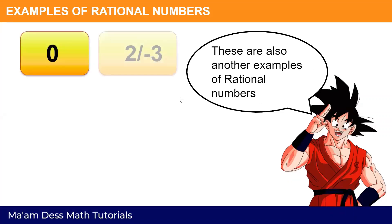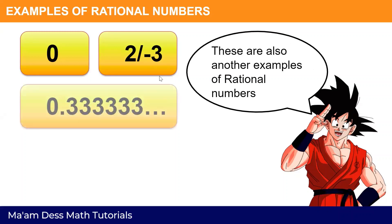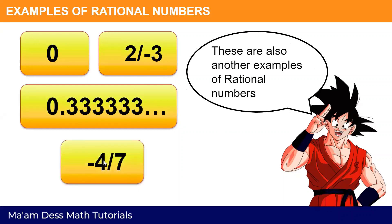Examples include: zero; two over negative three; zero point three repeating; and negative four over seven.